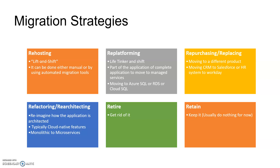Another example is a web application hosted on your own on-premises physical machine that you can simply move to App Services, which is a managed service by Azure. Similarly, you have Elastic Beanstalk from AWS or App Engine from GCP. The third strategy is repurchasing or replacing.